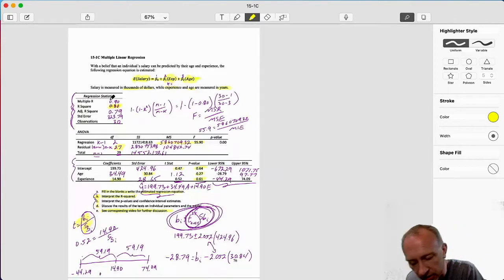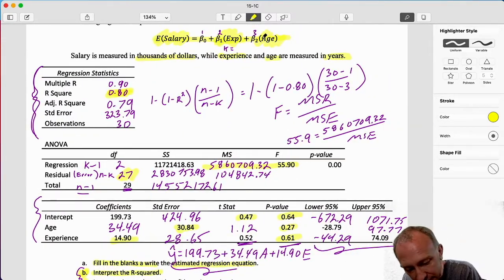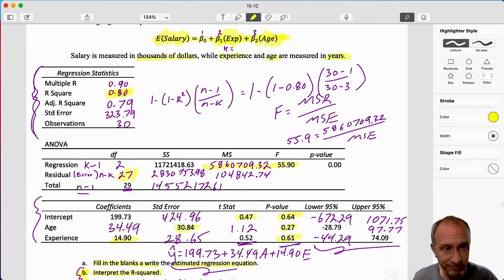So here I would say the amount of experience a person has combined with their age explains 80% of the variation in their salary. I'm interpreting that r squared specifically in the context of our problem, talking about the variables that are in our model.